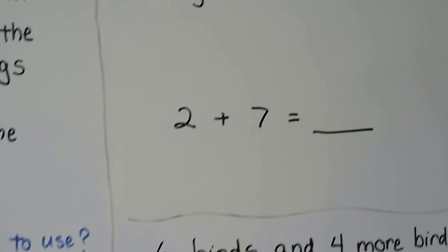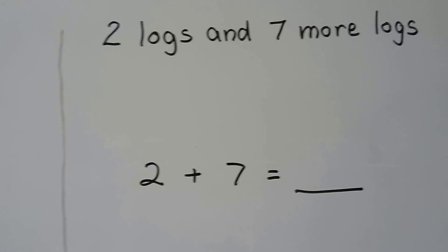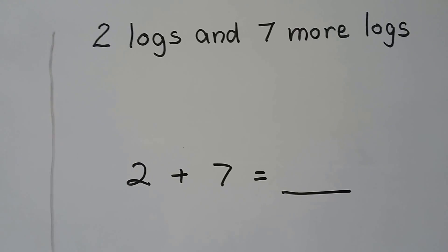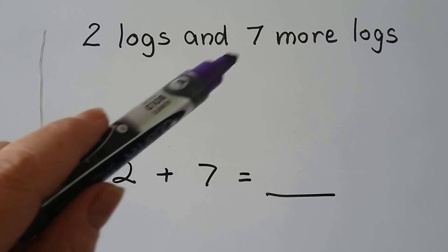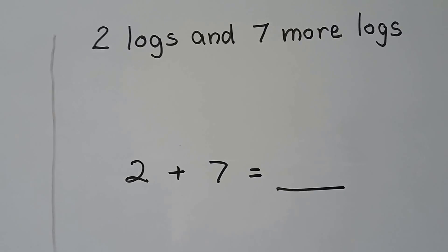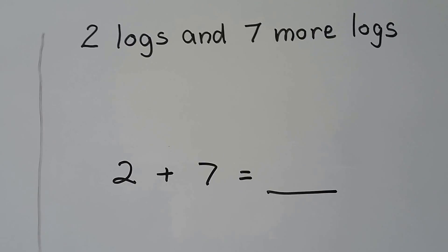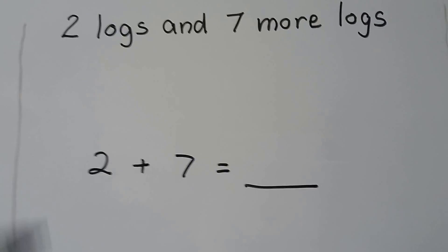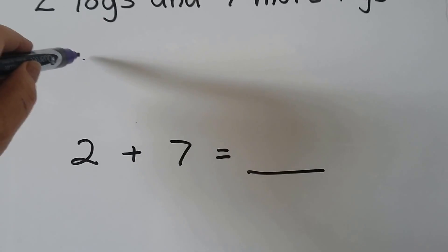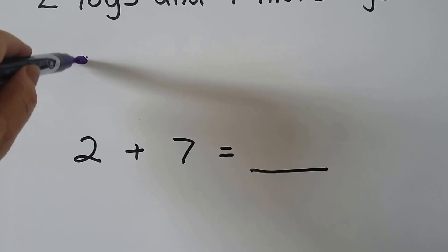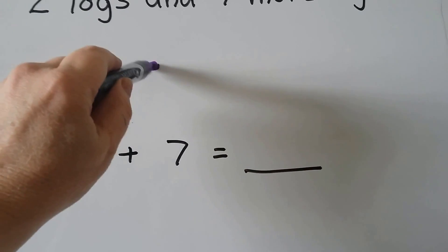Two logs and seven more logs. Two plus seven. Two plus seven is equal to — we have two logs and seven logs.